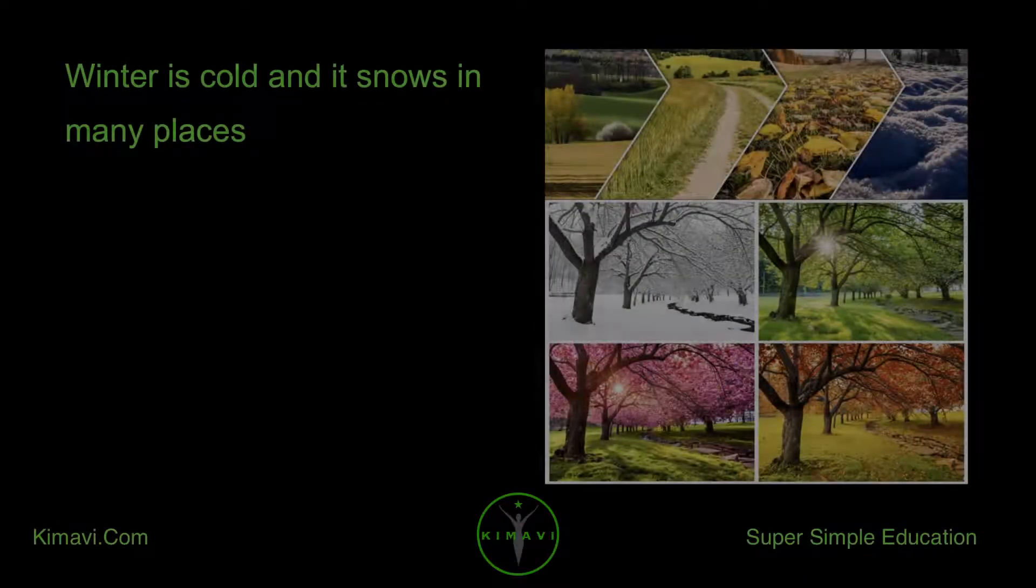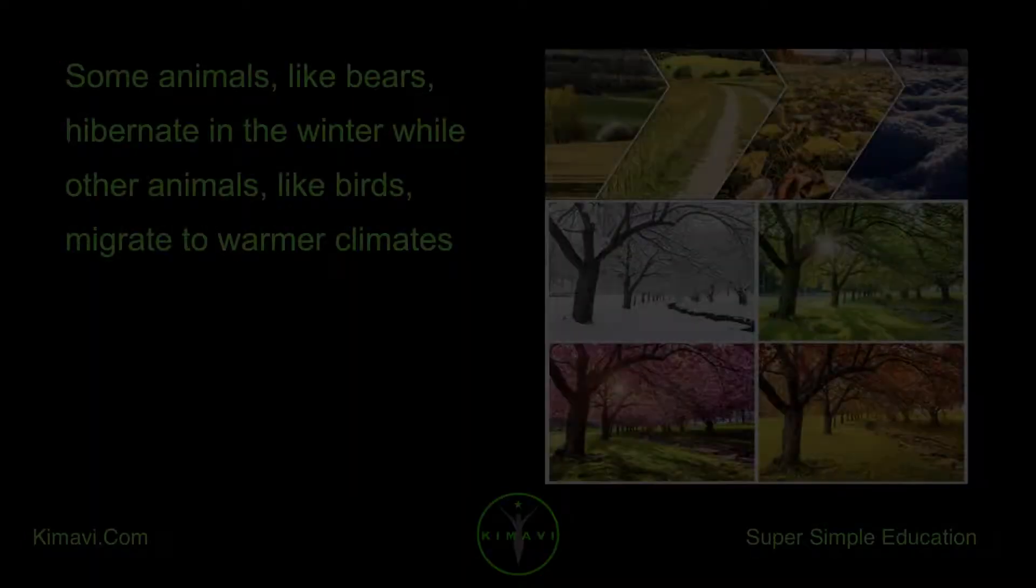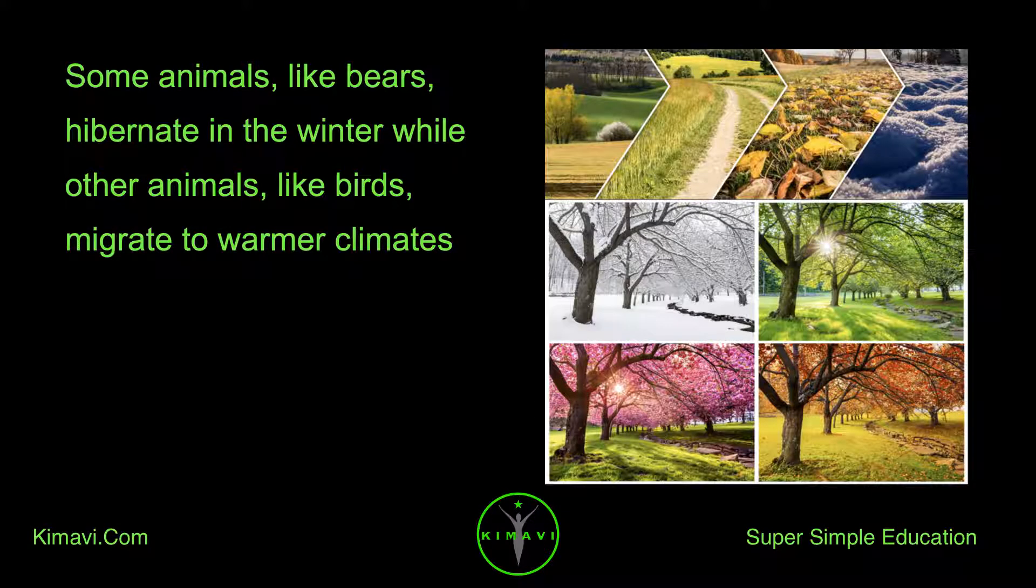In autumn the leaves change colors and fall off the trees and school starts again. Winter is cold and it snows in many places. Some animals, like bears, hibernate in the winter while other animals, like birds, migrate to warmer climates.